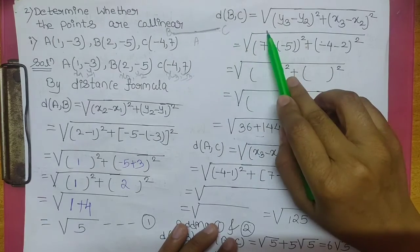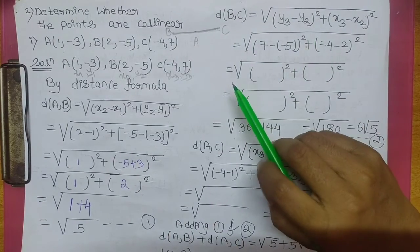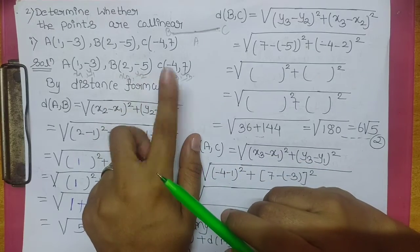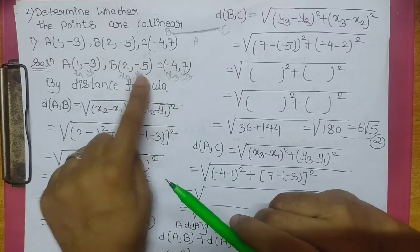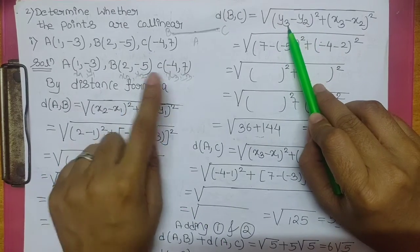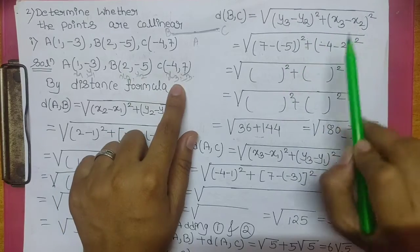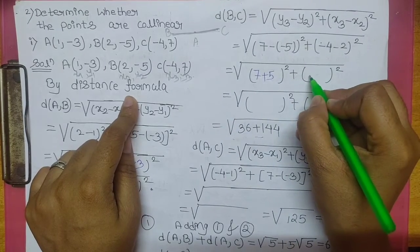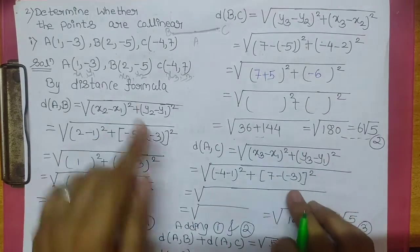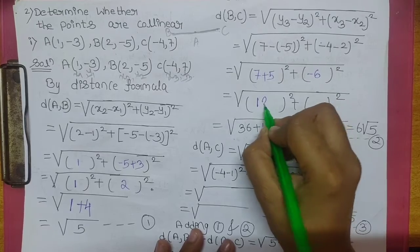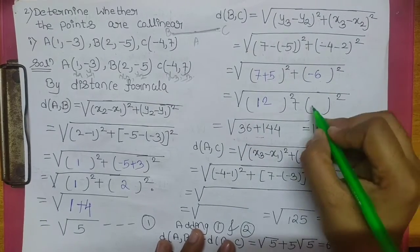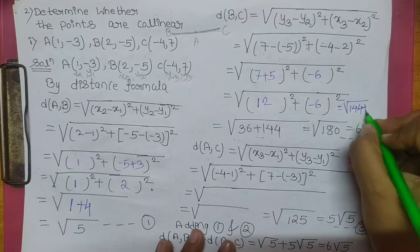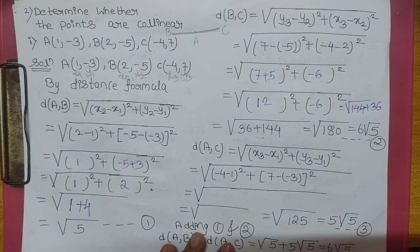Distance BC — please focus here. Square root of (x3 minus x2) ka square plus (y3 minus y2) ka square. y3 hamaara 7, y2 hai minus 5, x3 hai minus 4, x2 hai 2. This will be 7 plus 5 = 12, and minus 4 minus 2 = minus 6. 12 ka square is 144, 6 ka square is 36. 144 plus 36 = 180.